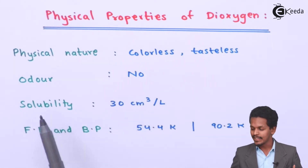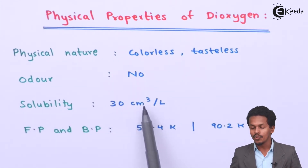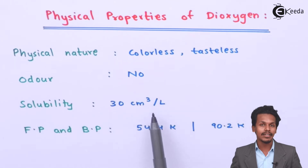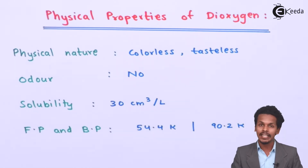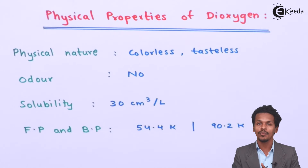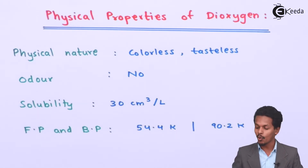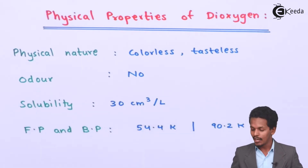Talking about solubility, that is around 30 centimeter cube per liter. It can be dissolved in one liter of water — that is, we can dissolve 30 cm cube of oxygen in one liter of water. So that is the solubility.